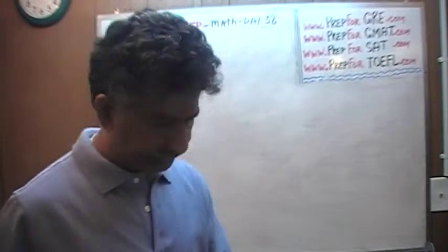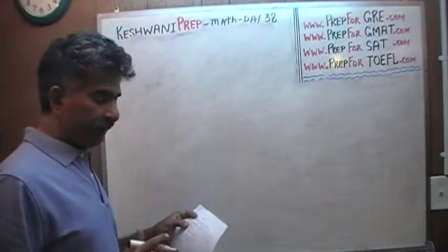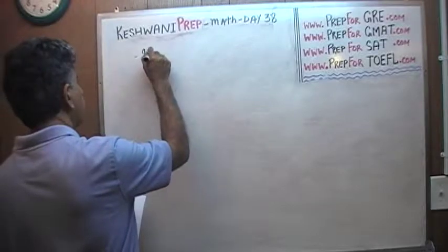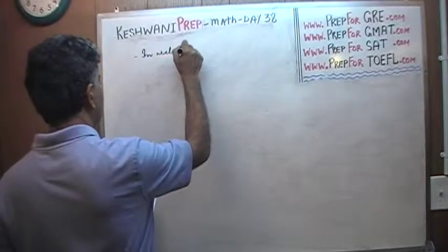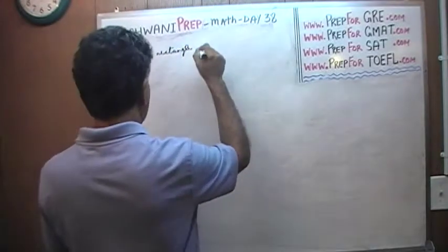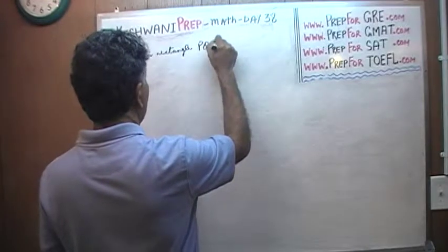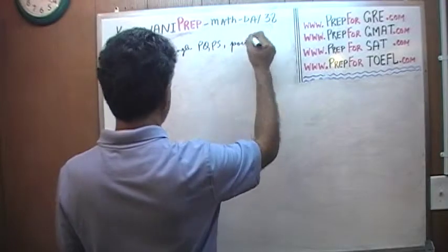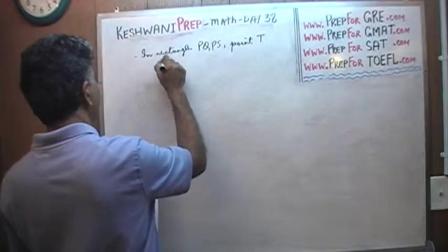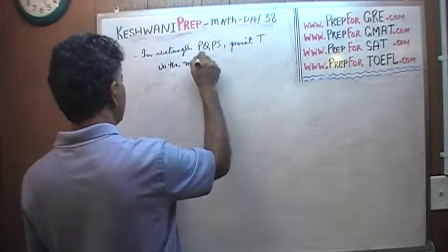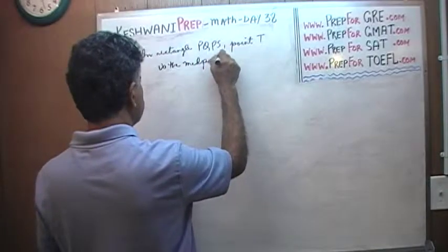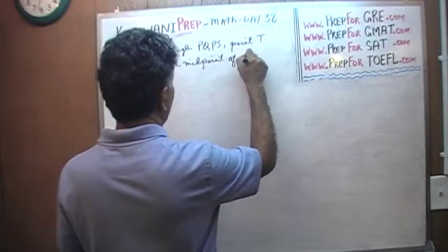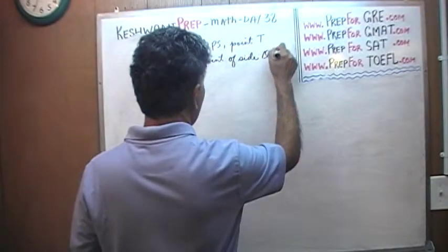Here's the problem for today. It's a geometry problem. In rectangle PQRS, point T is the midpoint of side QR.